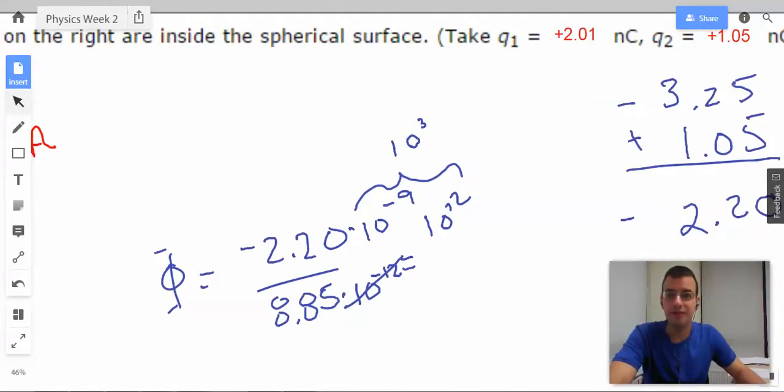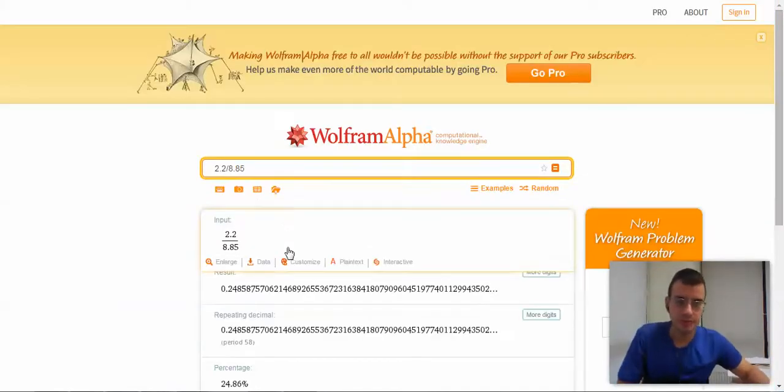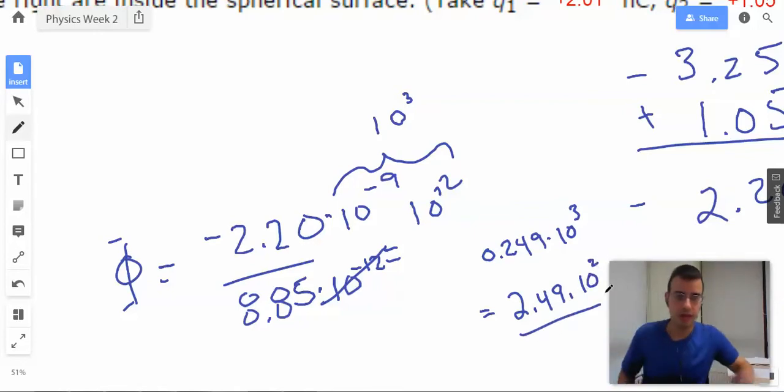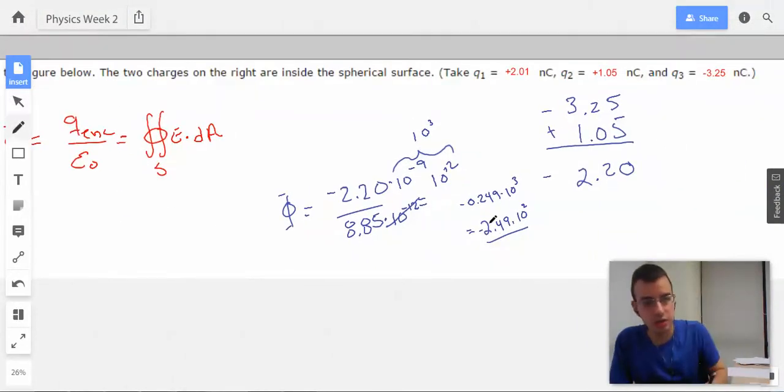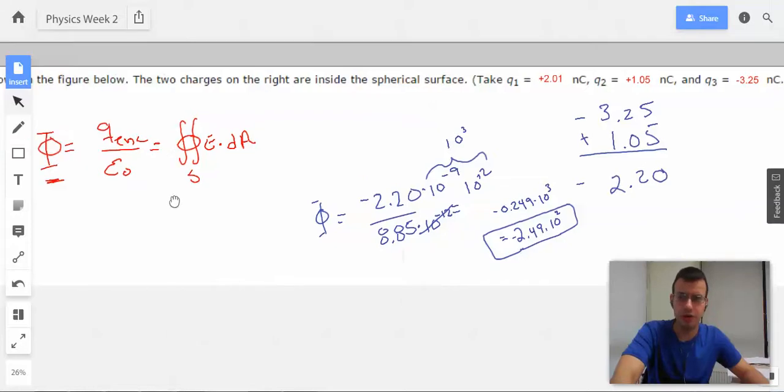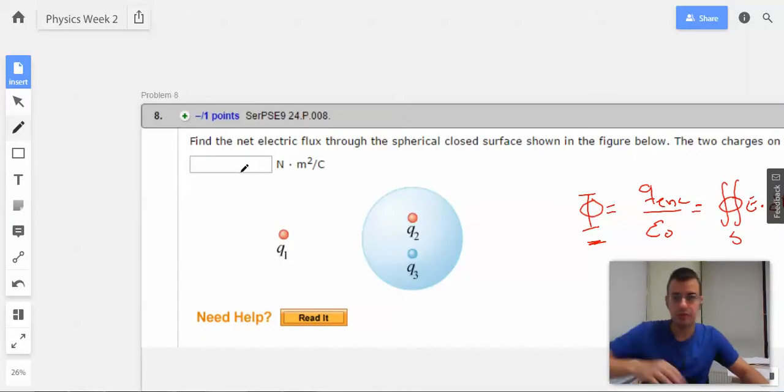All right. 2.2 divided by 8.85, and we get .249, so it equals .249 times 10 to the third, which equals .249 times 10 squared. And it's negative, which makes sense it's going to be negative because the Q3 is bigger than Q2. And that's probably going to be whatever electric fields are, it's like newtons per coulomb per meter squared, newtons, meter squared per coulomb, 2.49 times 10 squared.